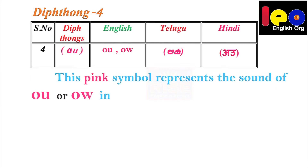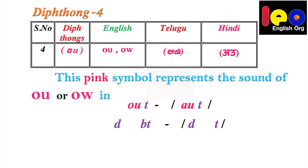Diphthong 4. You can see A and U together — it is also a diphthong. Both together sound 'aʊ', a strong AU. This pink symbol represents the sound of OU in 'out', OU in 'doubt', OW in 'now'. So this stands for 'aʊ'.